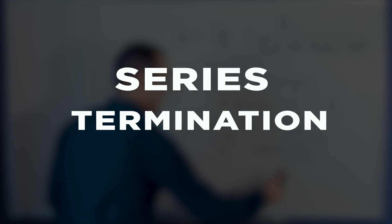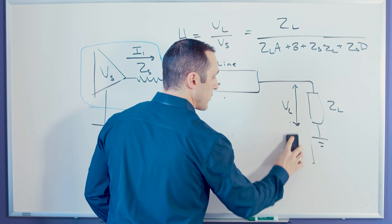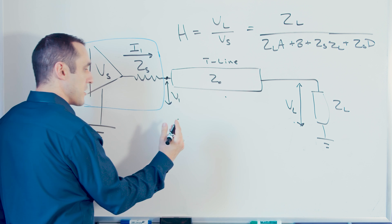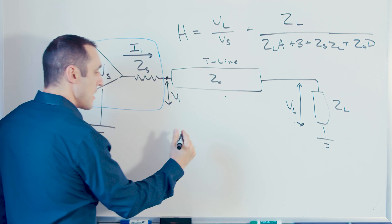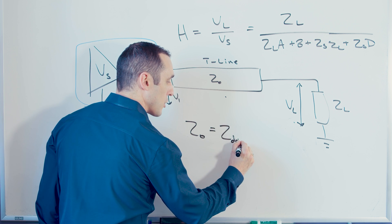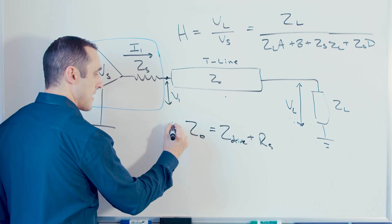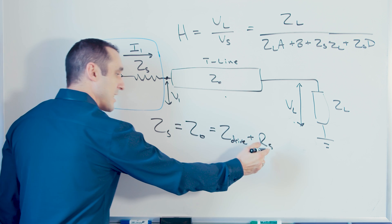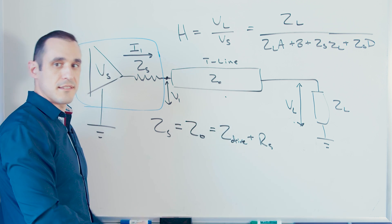Now let's look at the series termination case. When we apply a series termination, we're adding a resistor at the driver pin such that the source impedance is equal to the driver output impedance plus our series resistance, and we set that equal to the trace impedance Z sub zero. We add whatever series resistance we need to the drive resistance to match the trace impedance — now we're terminated.